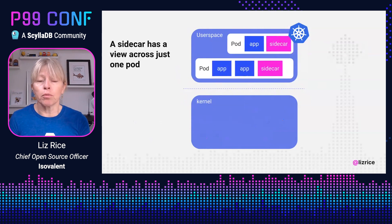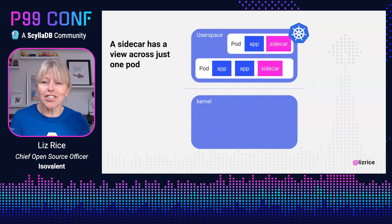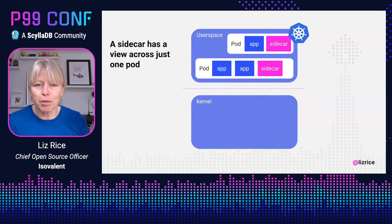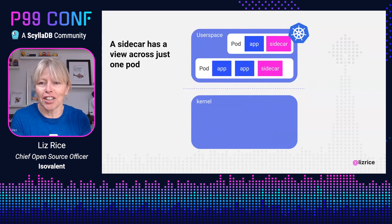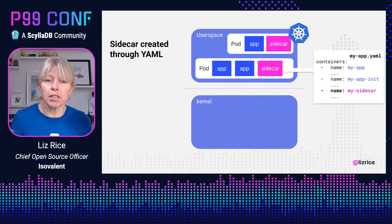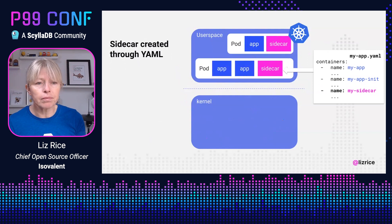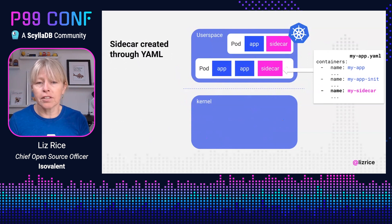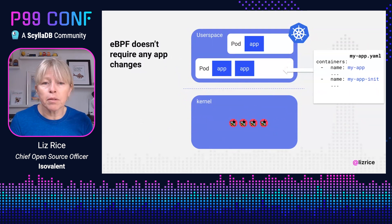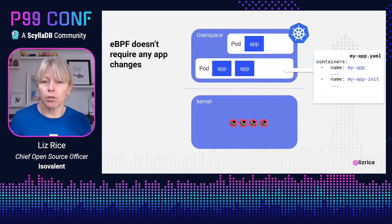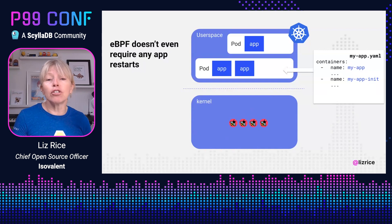For a sidecar container to observe or interact with application containers, it has to run inside the Kubernetes pod so that it shares Linux namespaces with those application containers. To do that, it has to be created by injecting additional lines into the YAML that defines the pod, and that has to be done for every app that needs to be instrumented. In contrast, with eBPF, we don't need to make any YAML changes at all — we just load eBPF programs into the kernel and attach them to events, without any changes to the apps or their configuration. We don't even need to restart our pods.